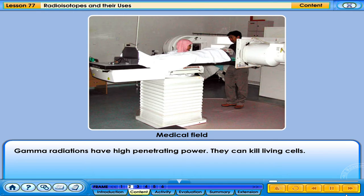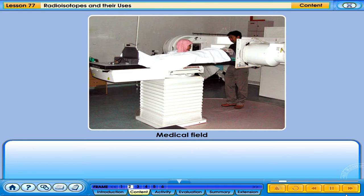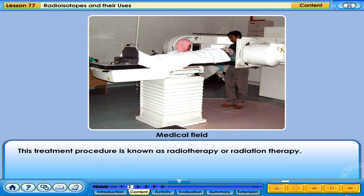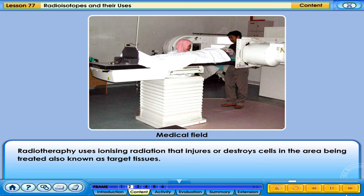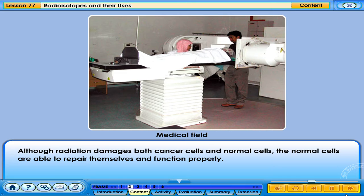Gamma radiations have high penetrating power and can kill living cells. A highly concentrated beam of gamma rays is used to kill cancer cells — a treatment procedure known as radiotherapy or radiation therapy. Radiotherapy uses ionizing radiation that injures or destroys cells in the target tissues, damaging their genetic material and making it impossible for these cells to continue to grow.